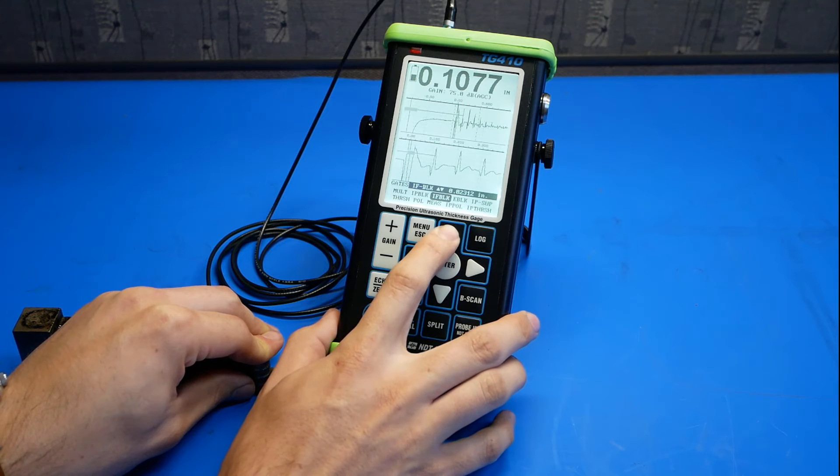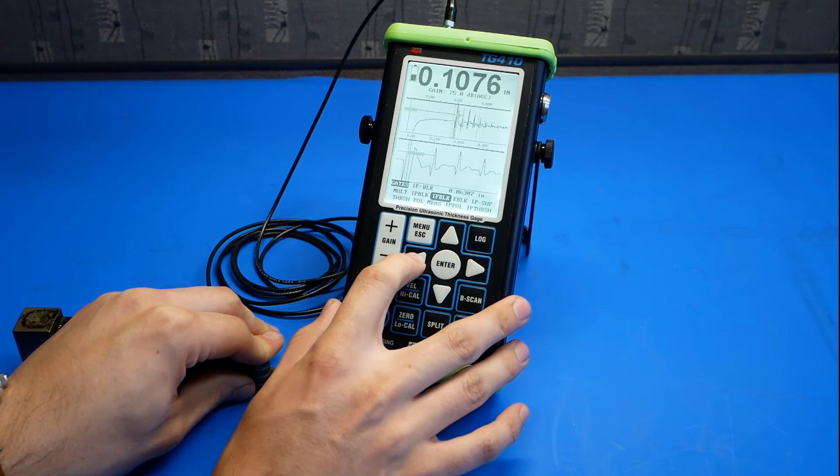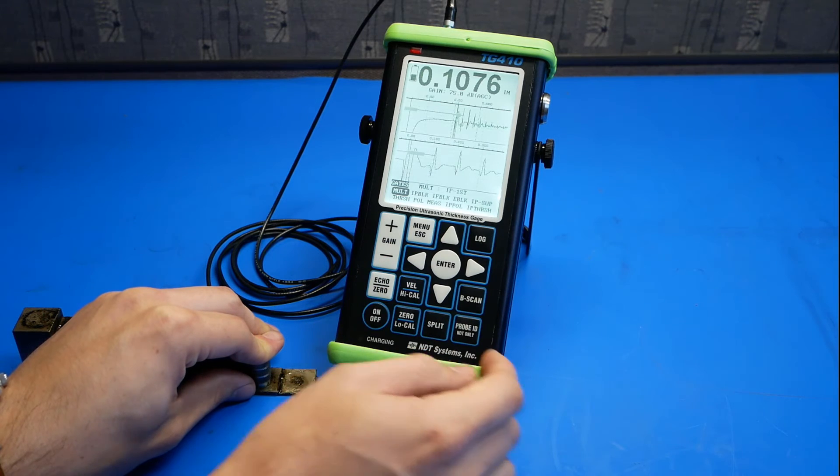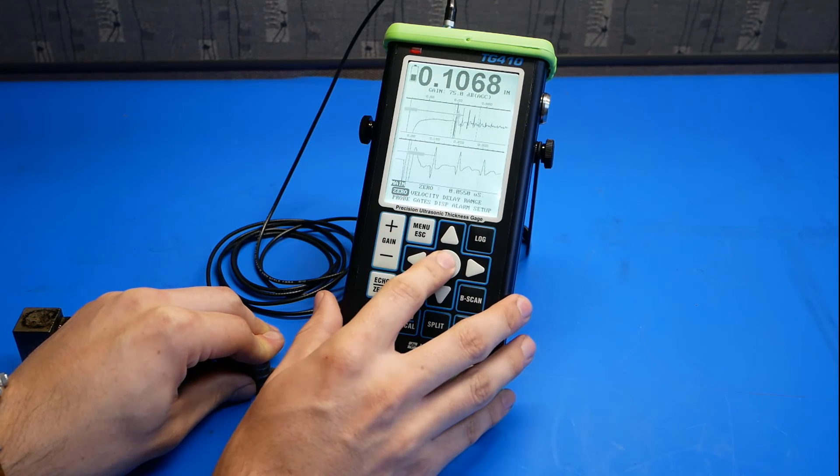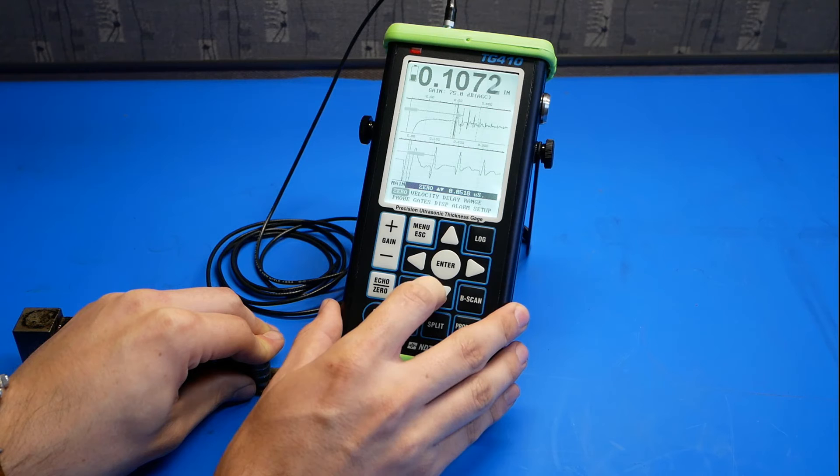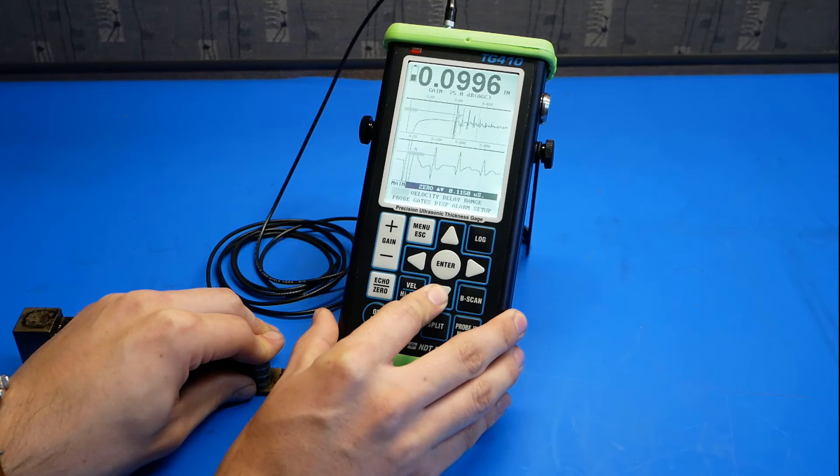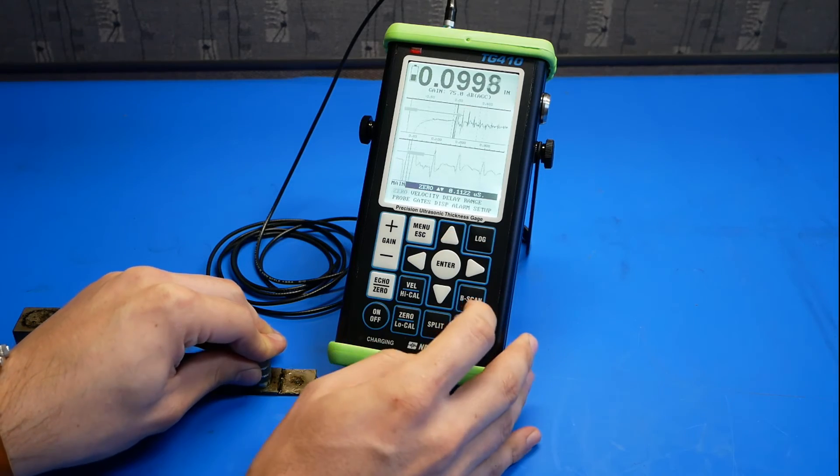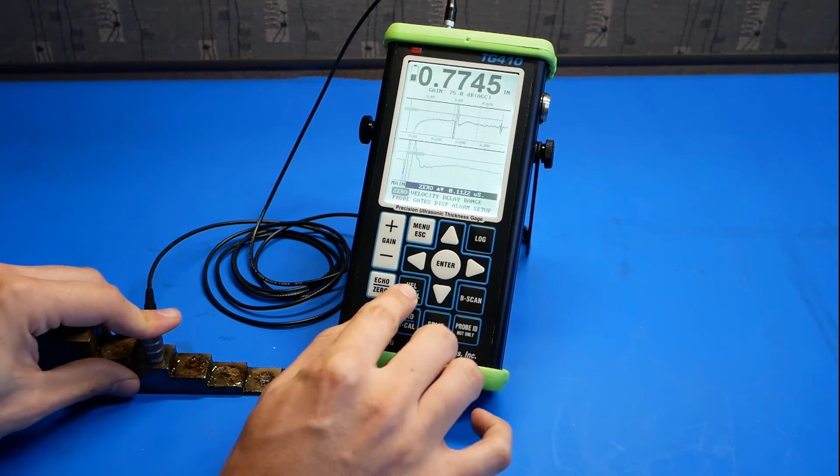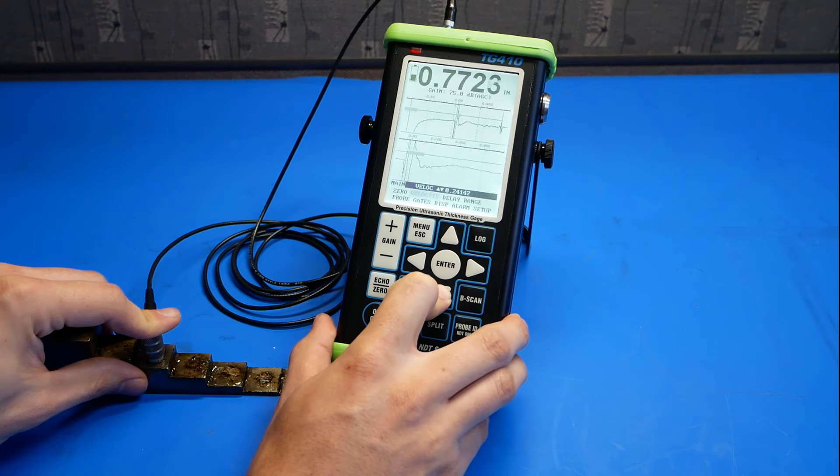Instead of IP block, it's IF block this time. Next, go to your zero and set it so that our reading reads 0.1 inches. And as before, go to a region of higher thickness and hit your velocity high cal. Adjust the velocity until we reach our desired value, in this case 0.75 inches.